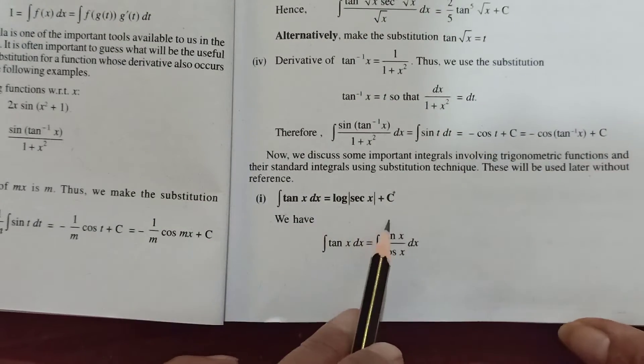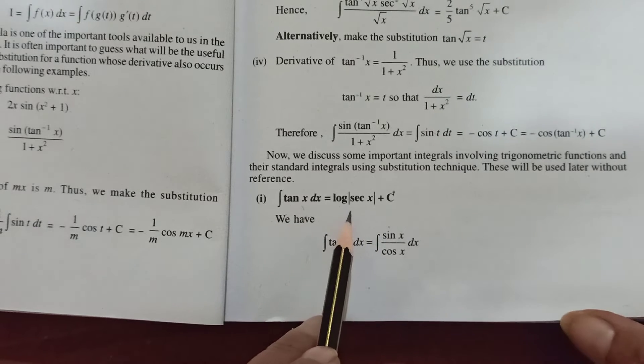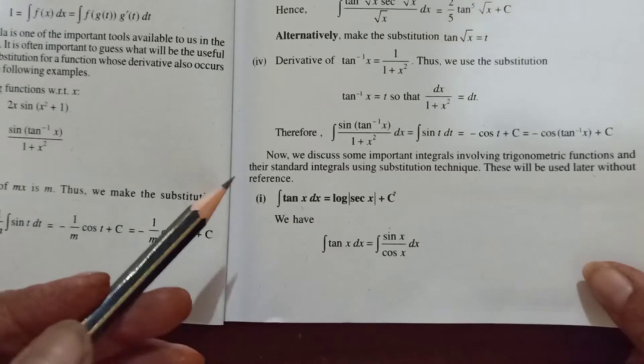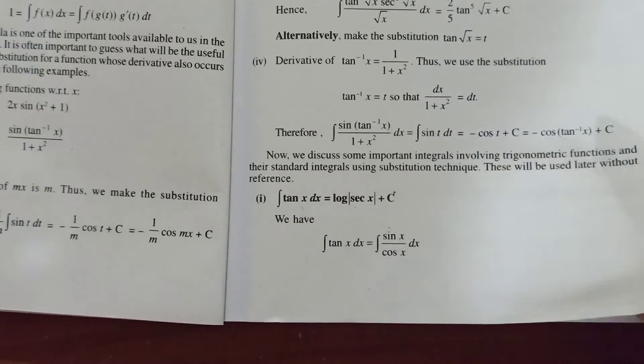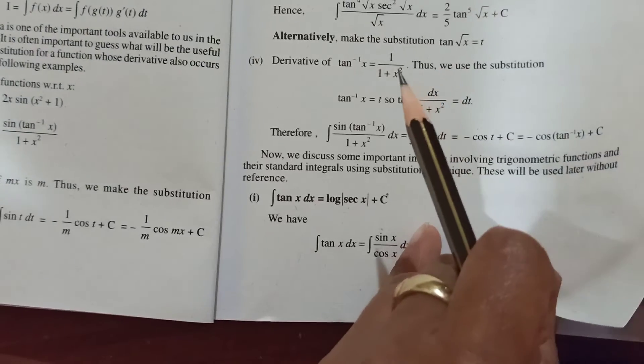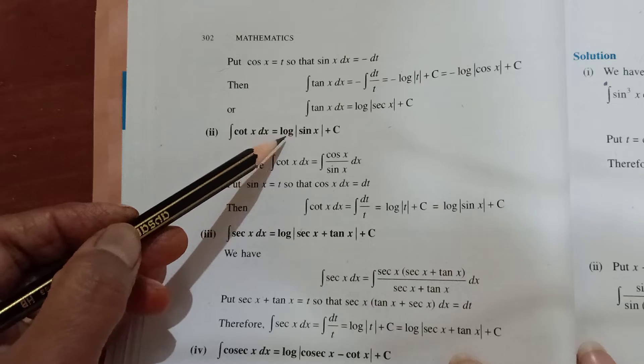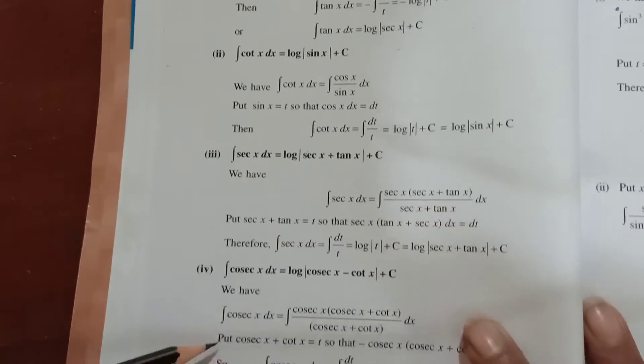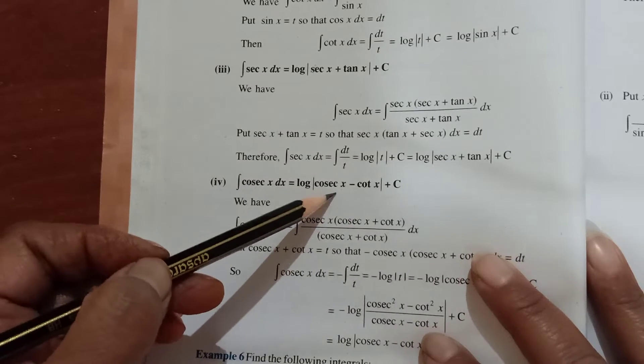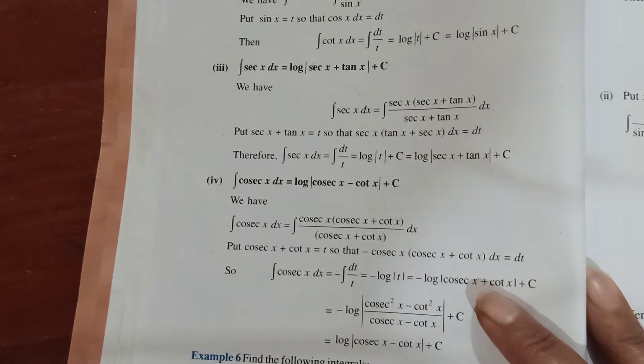With the help of technique of substitution they have derived the integral of tan x, which you have to learn. Integration of tan x comes out to be log sec x. Likewise furthermore, integration of cot x would be log sin x, of sec x is log of sec x plus tan x, of cosec x is log of cosec x minus cot x. Children, you need to learn them as your formula as well.